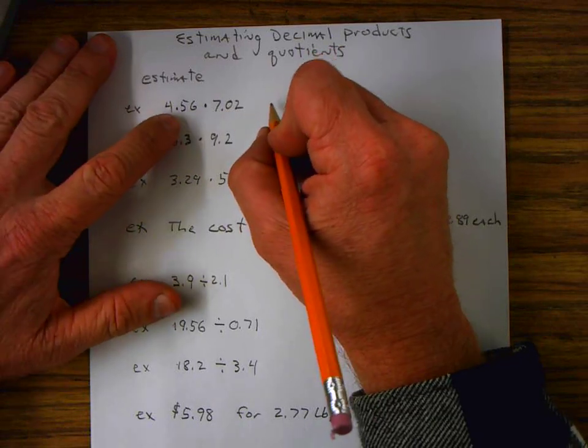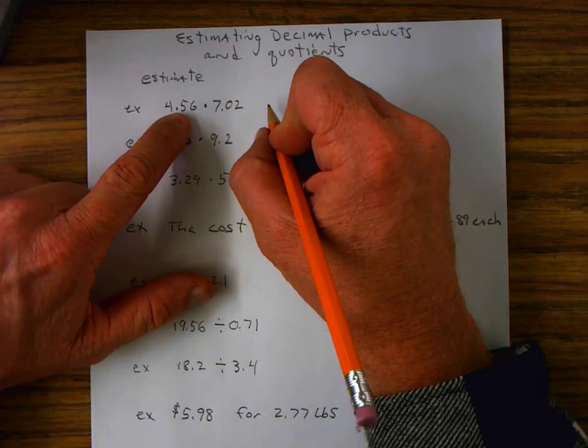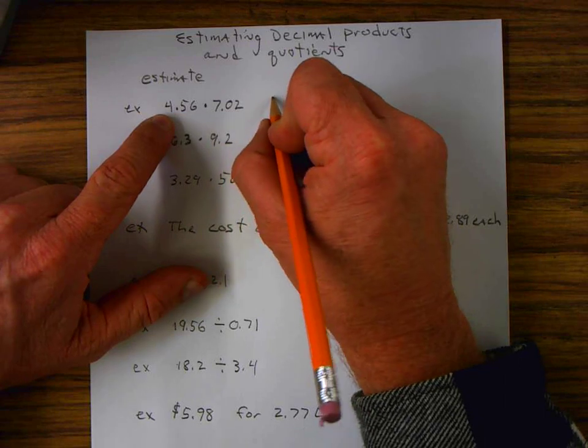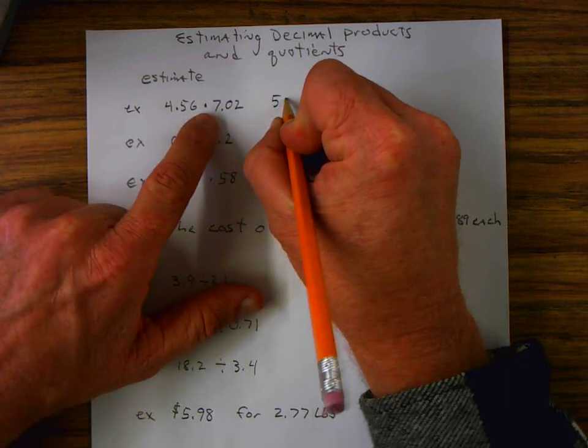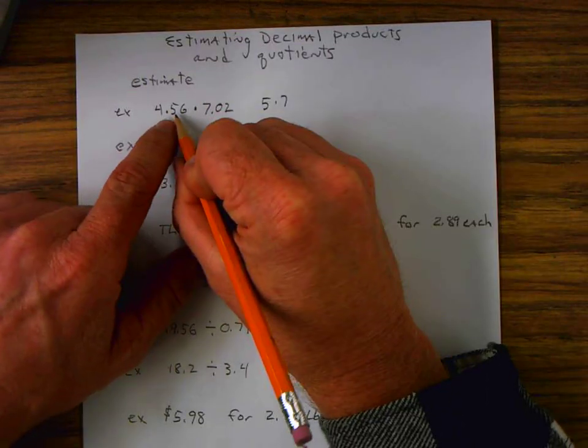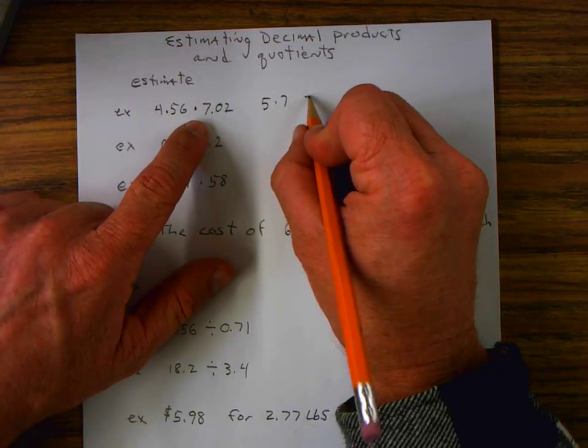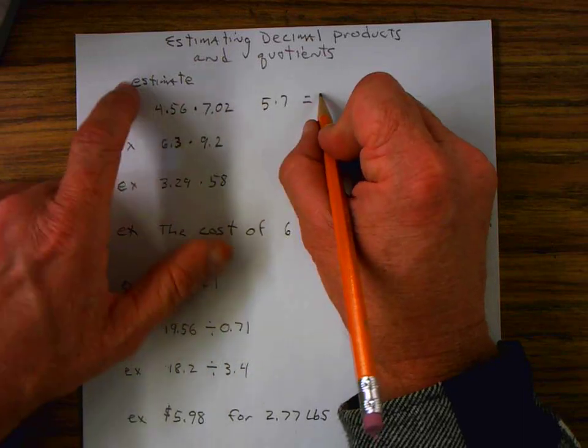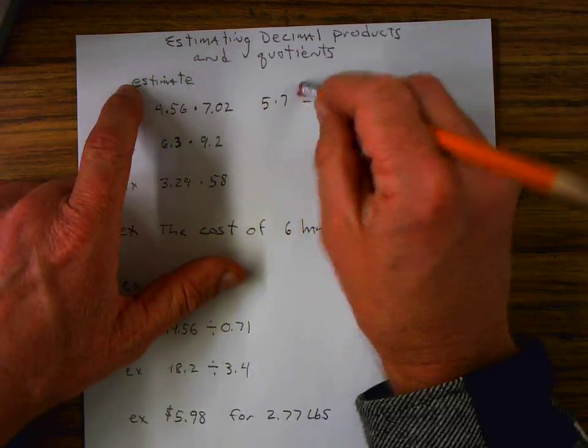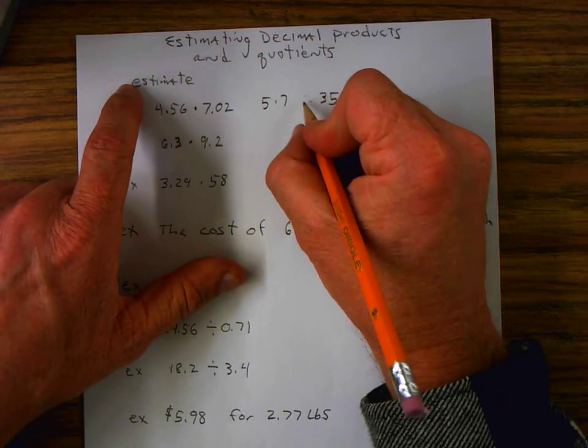So that can be rewritten as 4.56 can be written as simply 5 times 7. Because this is 5 or greater, it rounds up to 5, and this is less than 5, so that remains 7. 7 times 5 is 35. Let's put approximately because we are estimating.